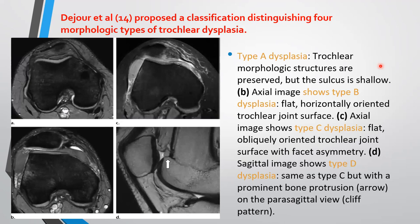Dejour proposed distinguishing four morphological types of trochlear dysplasia. In type A, the morphological structures are preserved. In type B, there is a flat, horizontally oriented trochlear joint surface. In type C, there is a flat and obliquely oriented trochlear joint surface with facet asymmetry. In type D, it is the same as type C but with a prominent bone protrusion on the parasagittal view, giving the cliff pattern.